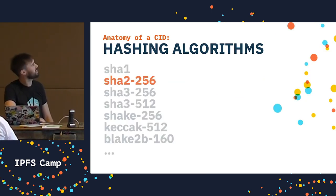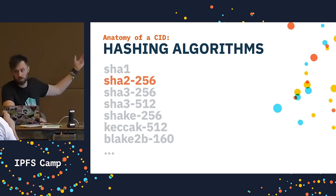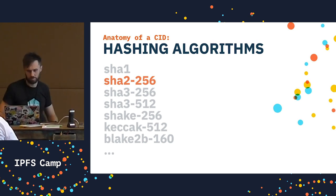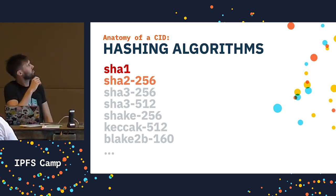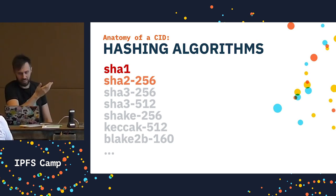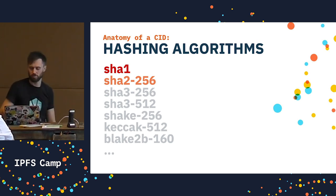There are many different hashing algorithms that exist. IPFS uses SHA-256 by default. Older algorithms like SHA-1 are broken — they're proven to not be collision-free. And the problem is that if algorithms can break, we're going to want to switch the hash we use by default in the future.